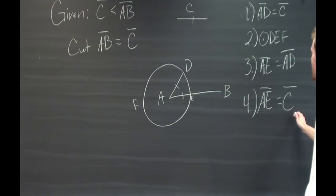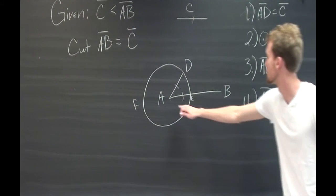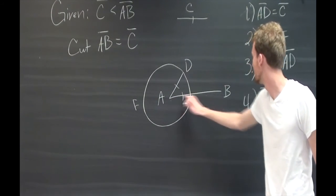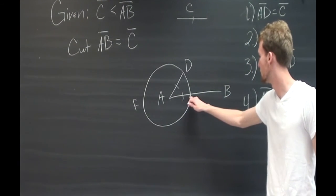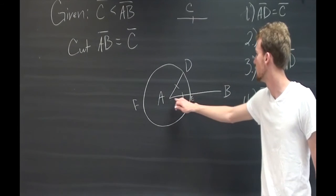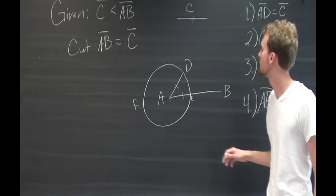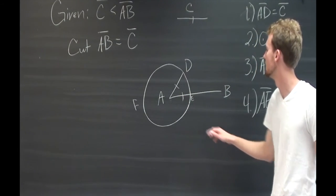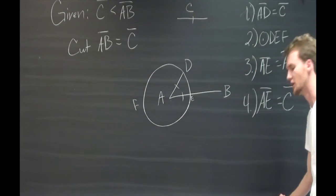And that's exactly what we set out to prove. We wanted to cut line AB at point E so that a segment of it was equal to C. So AE is equal to C.